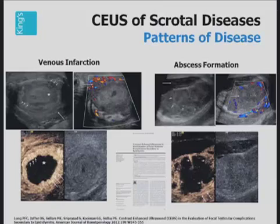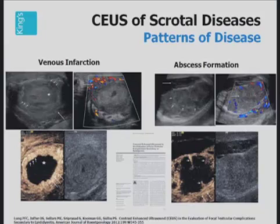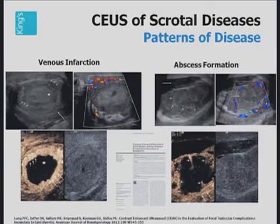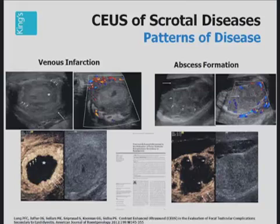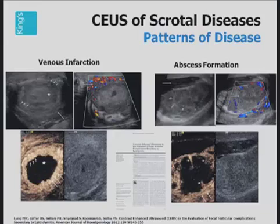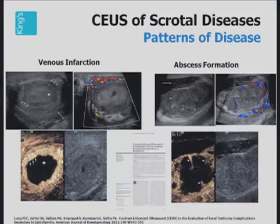These are two patients with entirely different abnormalities in the testes as a result of very severe inflammatory change. In the first patient, there is thrombosis in the vein in the spermatic cord and there is venous infarction in the testes. Contrast-enhanced ultrasound shows that the border is well delineated, there is peripheral enhancement and no internal vascularization. This is a venous infarction.